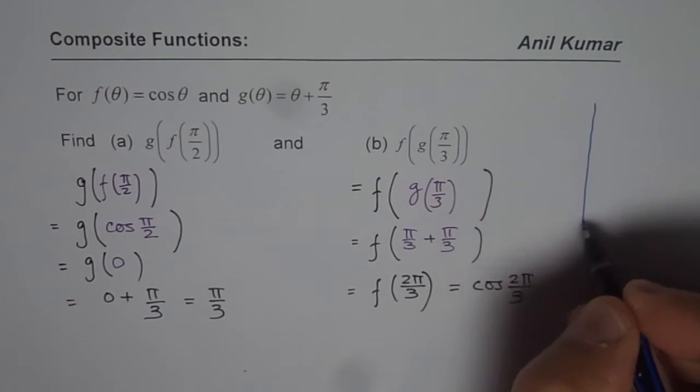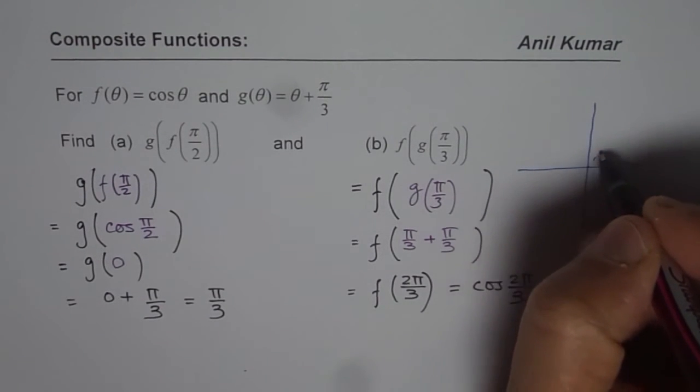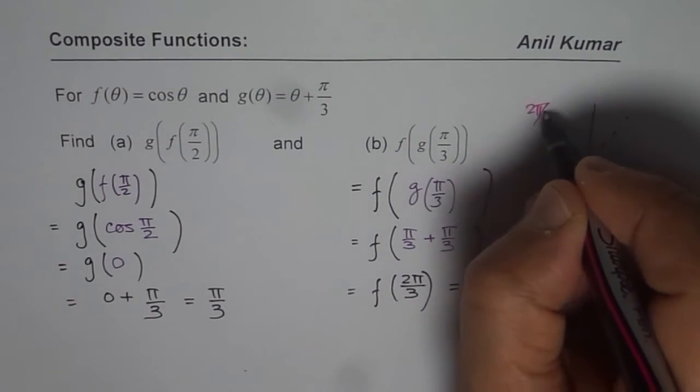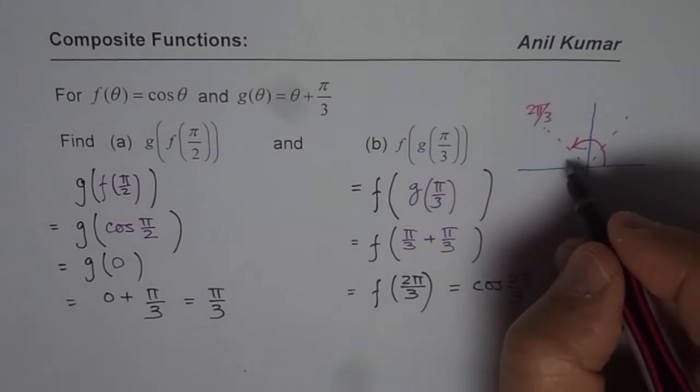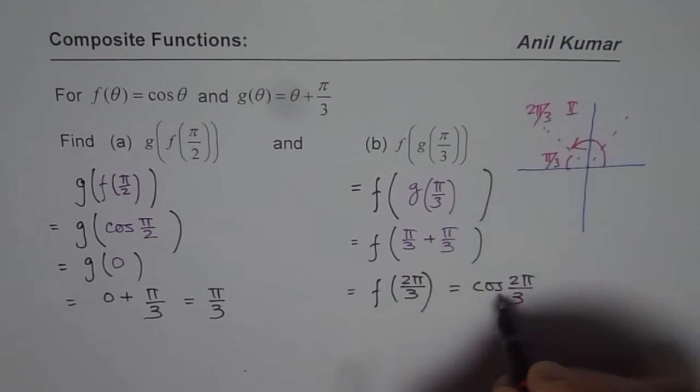cos(2π/3) - let's find the acute angle. This angle is in the second quadrant. This is π/3, this is 2π/3, so the principal angle, the acute angle, is π/3. Since we are in quadrant 2, this value is negative.